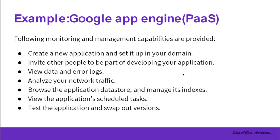In cloud computing, the particular service model directly affects the type of monitoring and the intended stakeholder responsibility. For example, Google App Engine, which is a Platform as a Service, has very specific monitoring and management capabilities: create a new application and set it up for your domain, invite other people to collaborate, view data and error logs, analyze network traffic, browse the application datastore, manage its indexes, and view task queues.